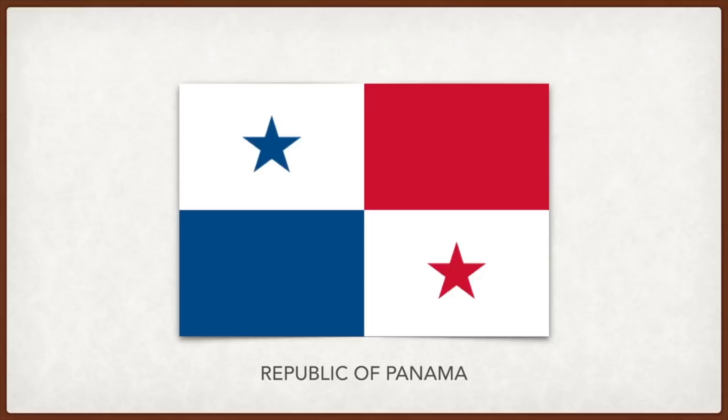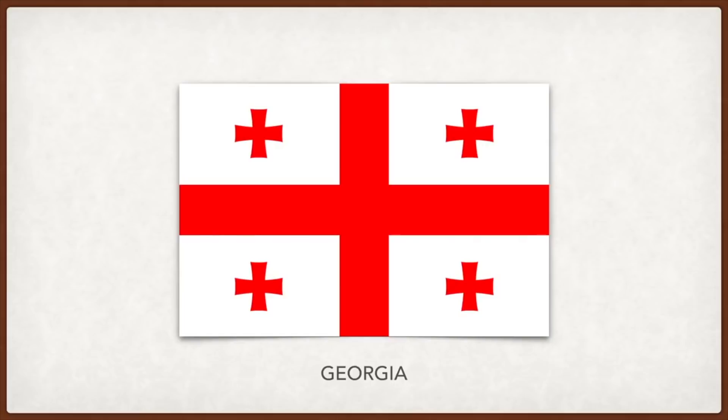Mauritania: green and the crescent and star represent Islam, and gold the sands of the Sahara Desert. Georgia: the flag is the flag of Saint George — like the flag of England — but with four smaller flags on each corner. It was originally a medieval banner of the Kingdom of Georgia and was a symbol of the Rose Revolution of 2003, which led the country in a more pro-Western, pro-European direction.